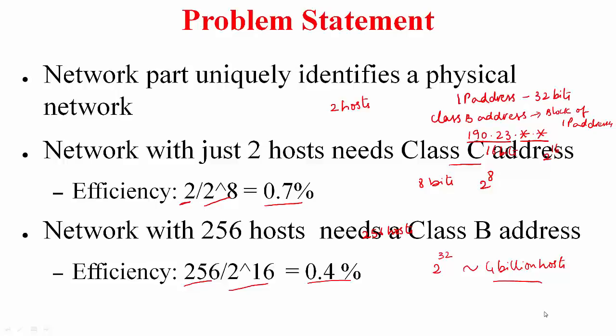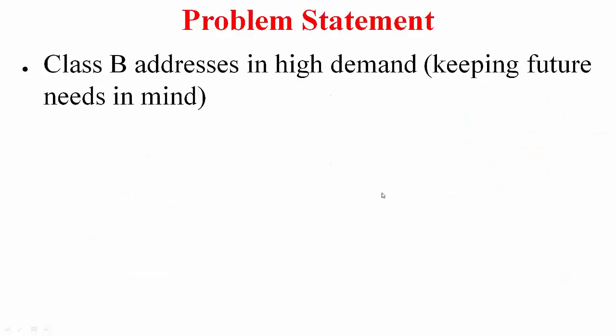Among class A, B, C addresses which address do you think will be in most demand? The number of organizations that support 2 to the power of 24 hosts whereby they need a class A address are going to be very few because these are really big organizations.